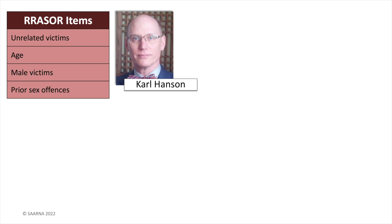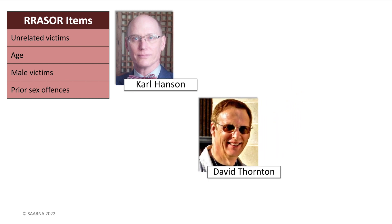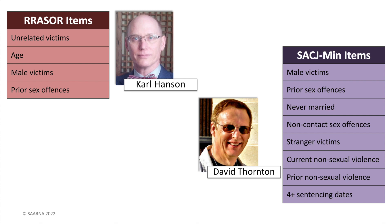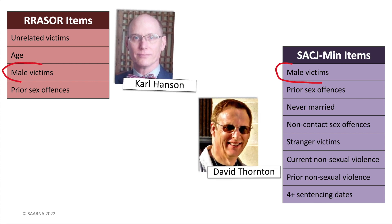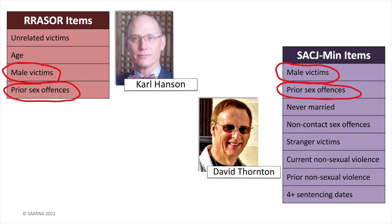Karl Hansen had been working along developing the RRASOR, but he wasn't alone. In England, David Thornton of Her Majesty's Prison Service created a similar tool, the Structured Anchored Clinical Judgment Minimum, or SAC-J-Min. Like RRASOR, SAC-J-Min was intended for screening purposes and contained items tapping into sex crime-specific problems, but it placed considerable weight on non-sexual criminal history — that is, general criminality. RRASOR almost exclusively targets sex crime-specific problems.